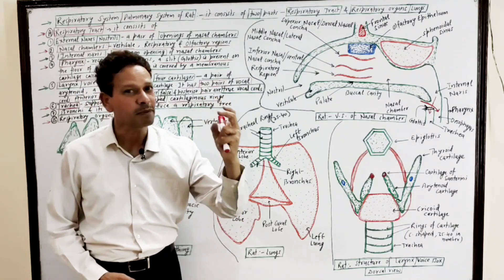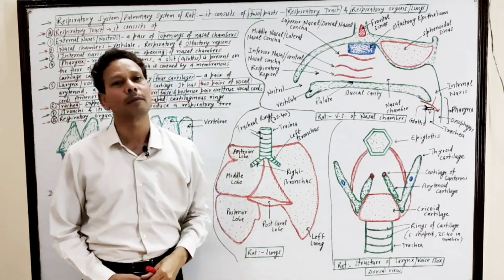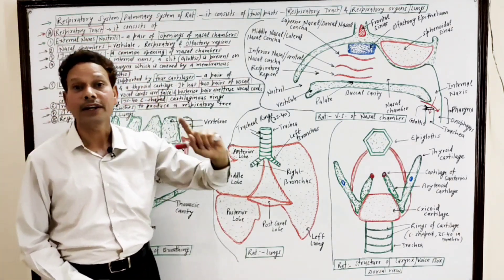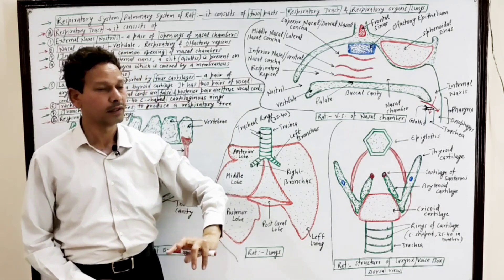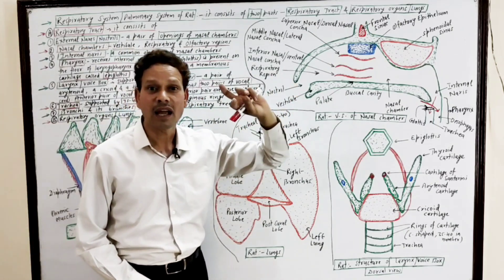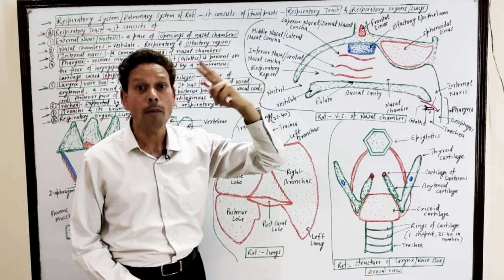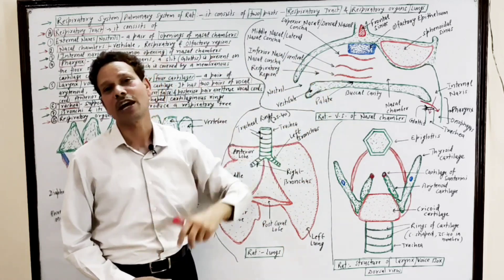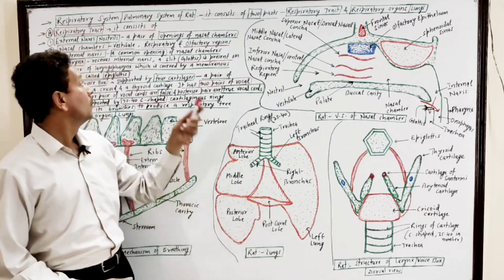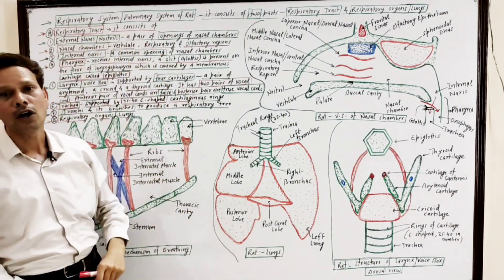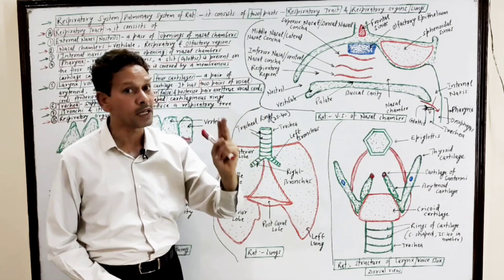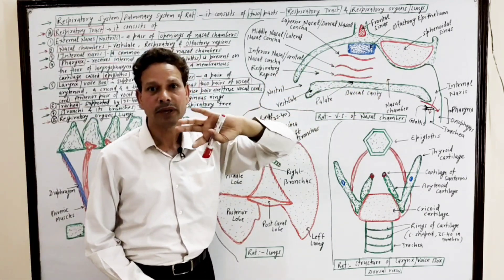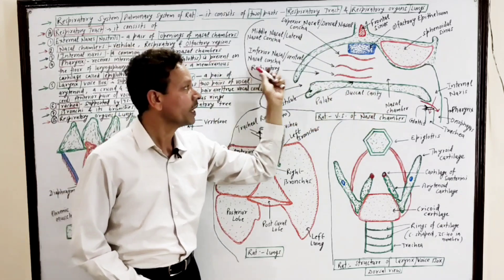The respiratory tract consists of the following parts. First, a pair of external nares or nostrils. Dear students, these nostrils are a pair of openings — these are the external openings of nasal chambers. Second part of the respiratory tract: a pair of nasal chambers. These are large air passages through which air passes.